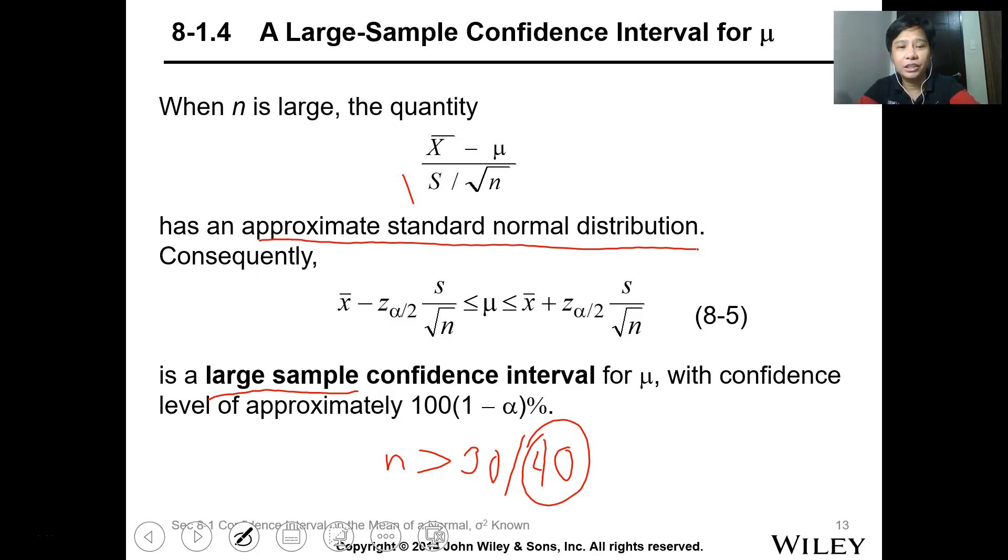With this, even if we don't know the standard deviation, we can utilize the standard deviation of the sample. And because it is large, we can use the z-table. It's the same as our previous lesson where we know the variance or standard deviation of the population. Basically, it's a large sample confidence interval for mu with confidence level approximately 100 times 1 minus alpha percent.